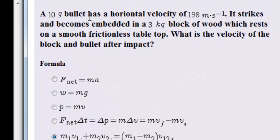Okay, a 10 gram bullet has a horizontal velocity of 198 meters per second. It strikes and becomes embedded in a 3 kilogram block of wood which rests on a smooth frictionless tabletop. What is the velocity of the block and bullet after the impact?